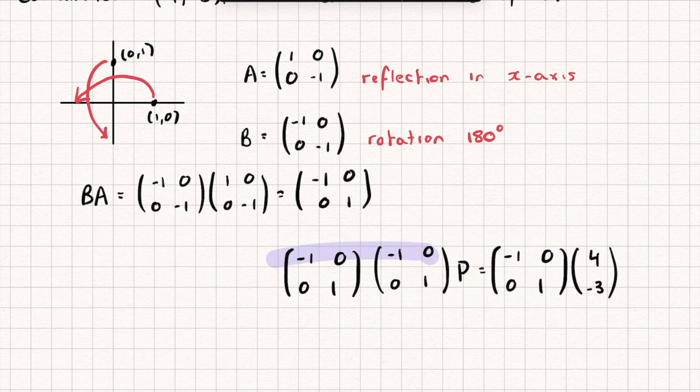Now these two matrices will disappear because they'll turn into the identity. So we get the original point P is equal to, well I'm just going to multiply this out and we're going to get negative 4 and negative 3. So the original point P had the coordinates negative 4, negative 3.